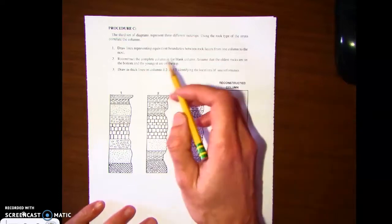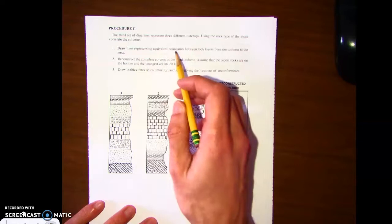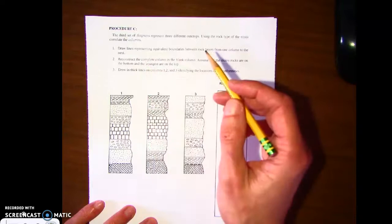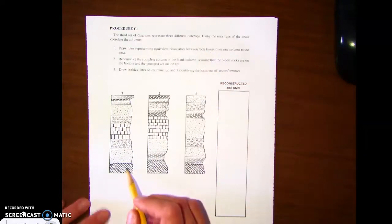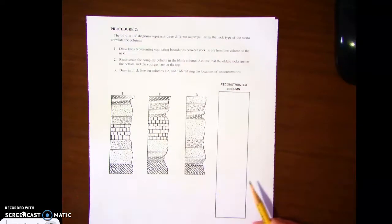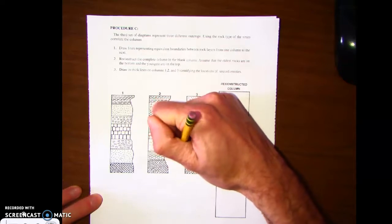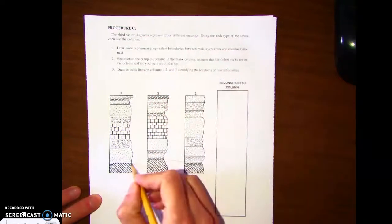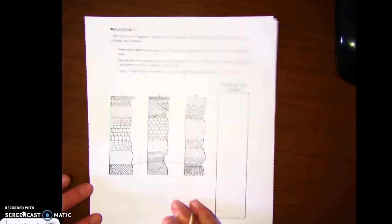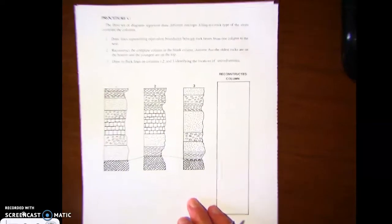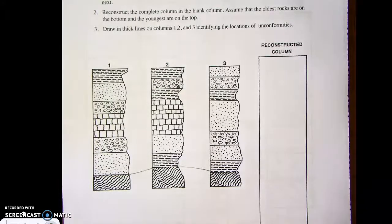Anyway, in this part of the lab, it says draw lines representing equivalent boundaries between rock layers from one column to the next. So basically what this means is if we have these three different locations with these sequences of rock, we're going to try to connect them and match them. So if we look down here, here's the symbol for gneiss, and we have gneiss at all three layers at the bottom. So I'm going to draw lines connecting the tops of those layers of gneiss. Let me zoom in so you can see that better.